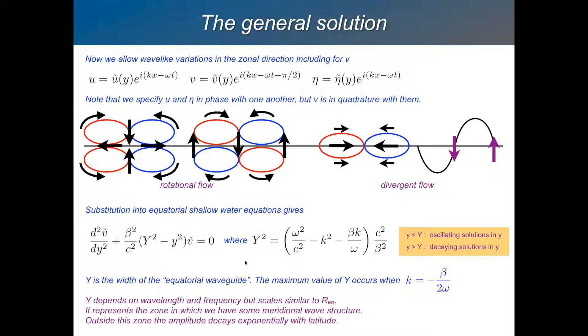What is this big Y? Well, this big Y, it's the width of the equatorial waveguide and it's a bit complicated. It depends on various properties of the wave, omega, k. It also depends on beta. For different waves, it'll have different widths, but it basically scales in a similar way to the equatorial radius. And this is the value of the parameters you need to make Y a maximum. So this is the zone where we have some meridional wave structure, big Y.